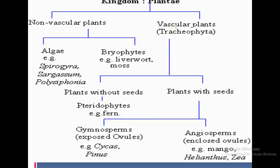We can also classify the plant kingdom into two groups on the basis of vascular tissue — meaning xylem and phloem vessels. Non-vascular plants do not require developed xylem or phloem because the plant size is very small, so food, water, and nutrients can be distributed by the process of diffusion.